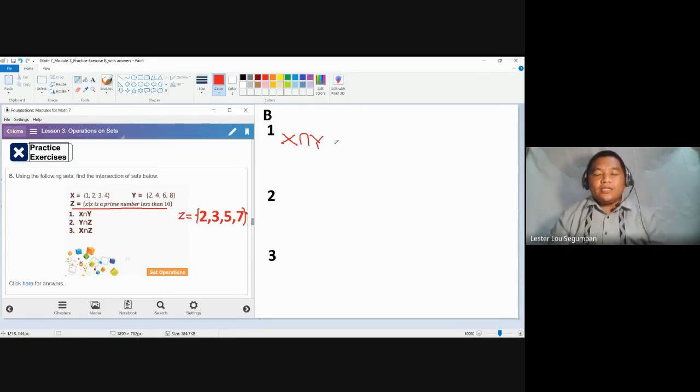It's in the middle part of the crossroads because that is the only area common to both roads or more. In short, for the intersection of sets X and Y, we just list the common elements found in both sets.